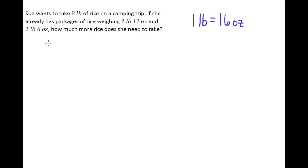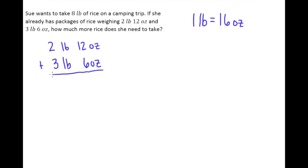So let's figure out how much she has now: two pounds twelve ounces plus three pounds six ounces. First I'll add my ounces — twelve plus six gives me 18 ounces — and two plus three is five pounds.